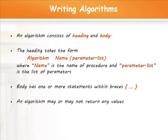The convention used here is, every algorithm has two steps, heading and body. The algorithm heading comprises the keyword algorithm, name of the algorithm, and the parameter list to be supplied to the algorithm. The body of the algorithm comprises the instructions enclosed in braces. An algorithm may or may not return a value.